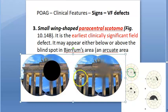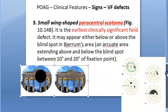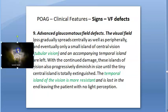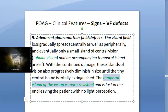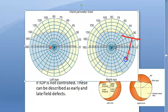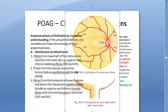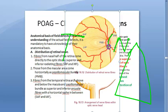In advanced glaucomatous field disease, there is a small island of central vision — tunnel vision — and a small island of temporal vision remaining. In the right eye, temporal vision corresponds to the nasal retina. The nasal retina is relatively resistant to glaucomatous damage. The most sensitive fibers are the arcuate fibers. The macular fibers explain retention of central vision, and the nasal retina explains the residual island of temporal vision.